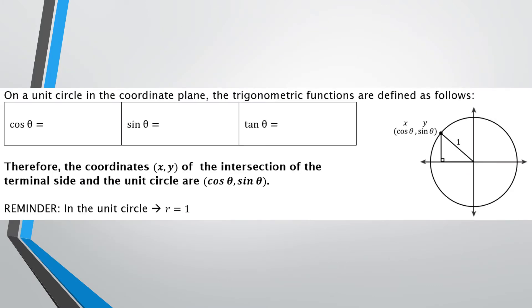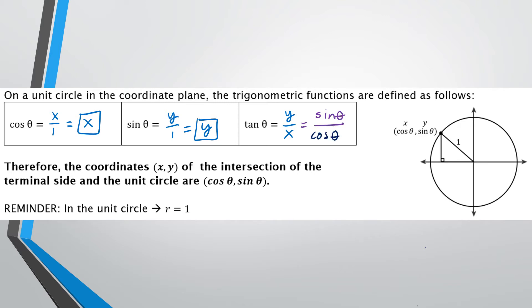From the previous slide, cosine of theta equals x over 1, which simplifies to x. Sine equals y over 1, which simplifies to y. And tangent equals y over x. Since y equals sine theta and x equals cosine theta, the tangent of theta can be found by dividing sine by cosine. This will be a key tool for finding tangent on the unit circle.